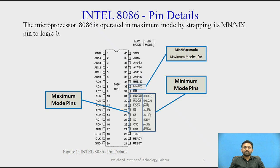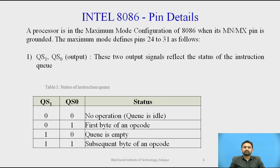In the pin diagram of the 8086, the microprocessor is operated in maximum mode by strapping its MN/MX pin to logic 0. A processor is in maximum mode configuration when its MN/MX pin is grounded. The maximum mode defines pins 24 to 31.